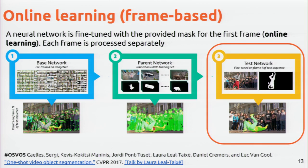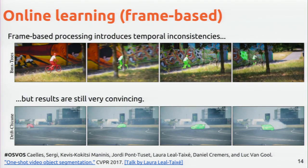One limitation of this approach is that since it's processed frame by frame separately, you might have some inconsistencies. For example, in green you have predictions where the network incorrectly assigns part of the wall to the object — which could probably be solved with temporal consistency. Still, the results were pretty good for this work. You can see that even a very small car in the first frame, what's learned from that frame is enough to distinguish the object from the background in subsequent frames.